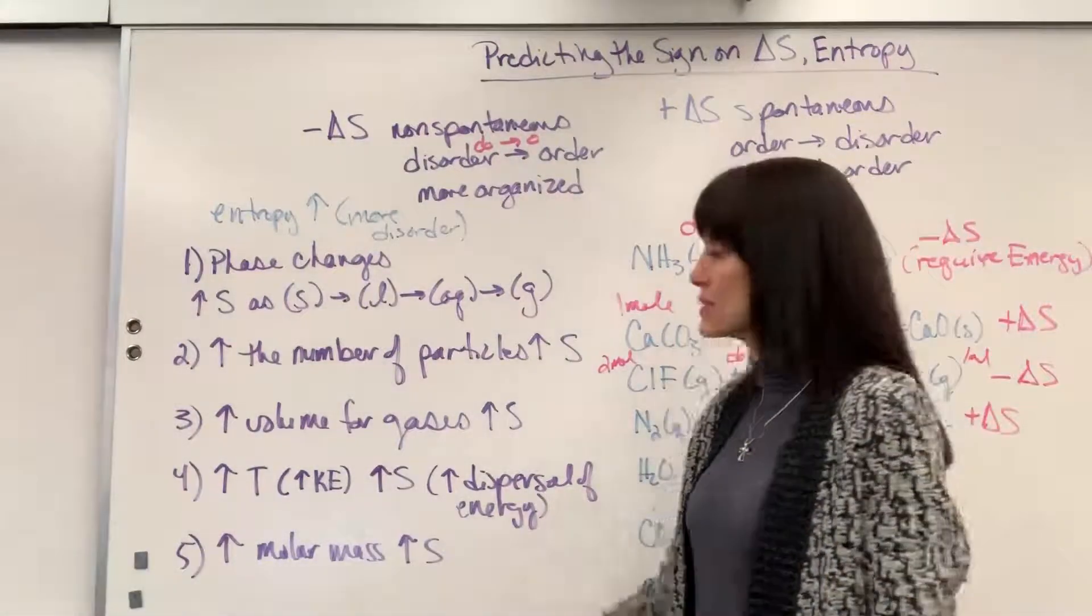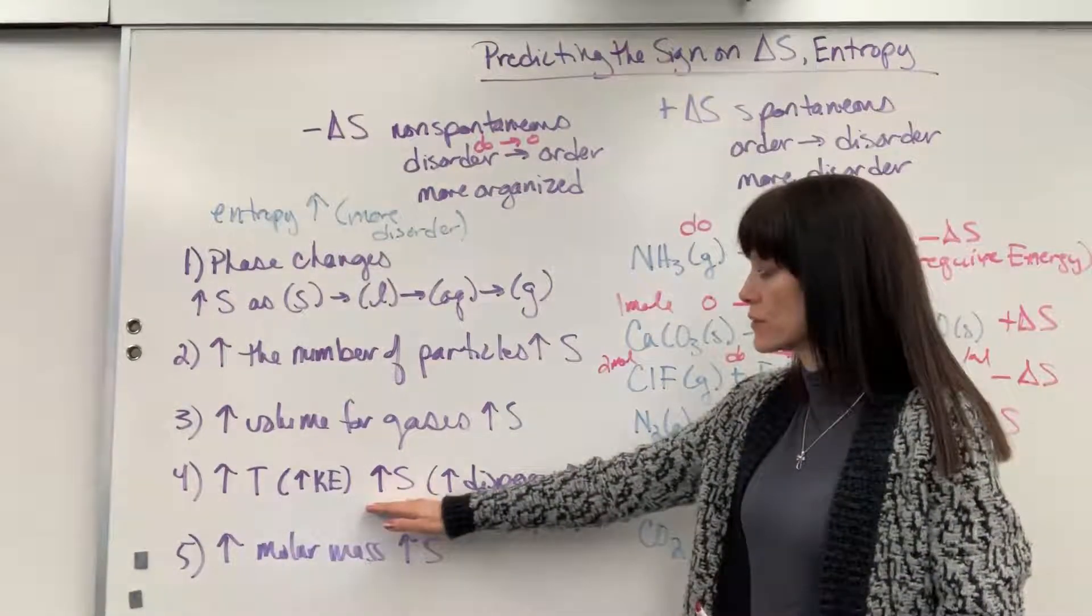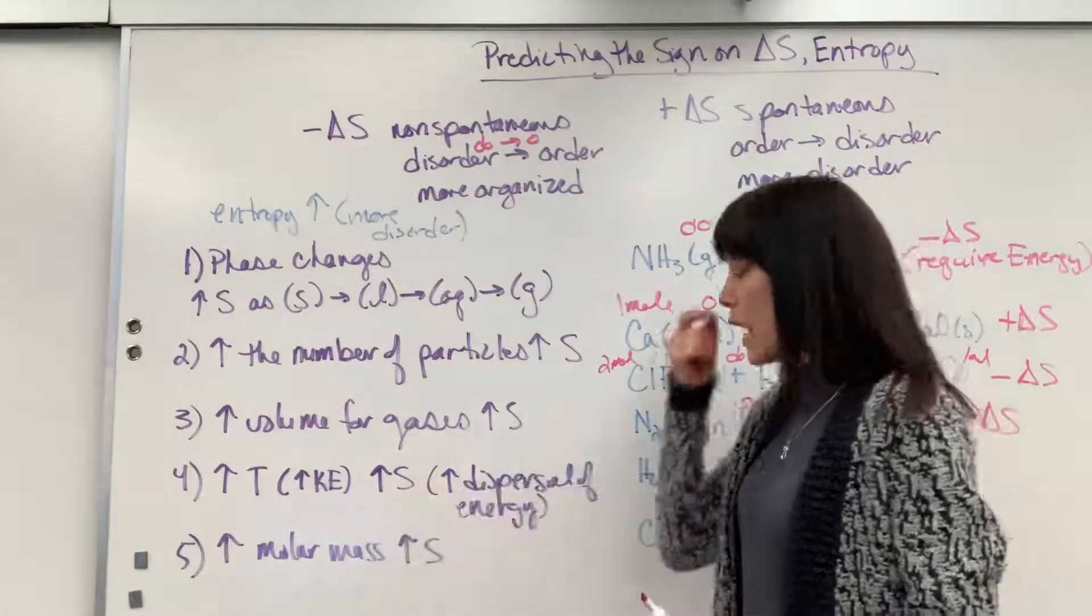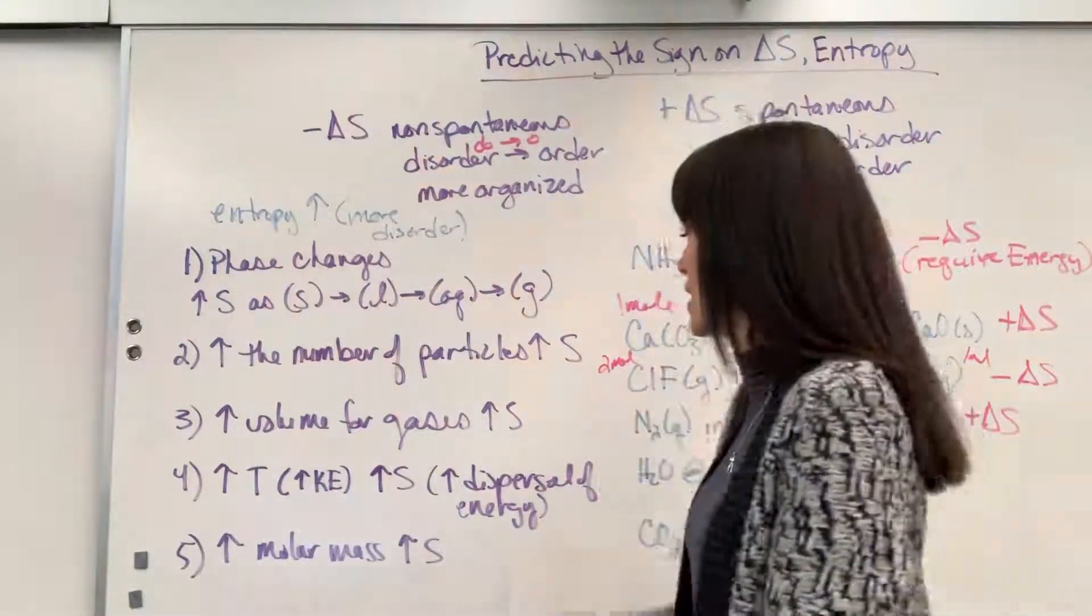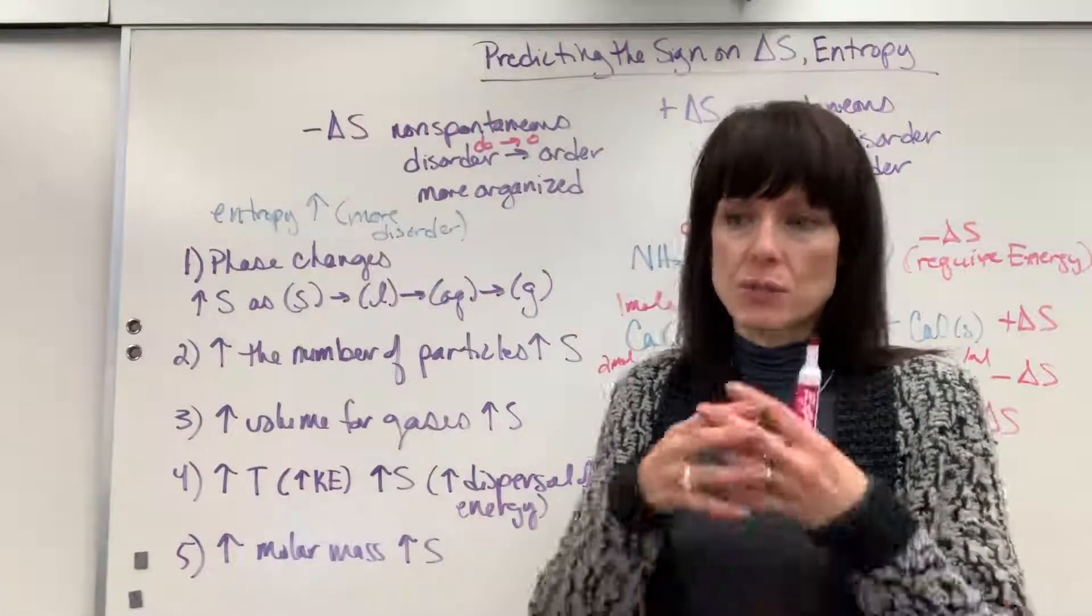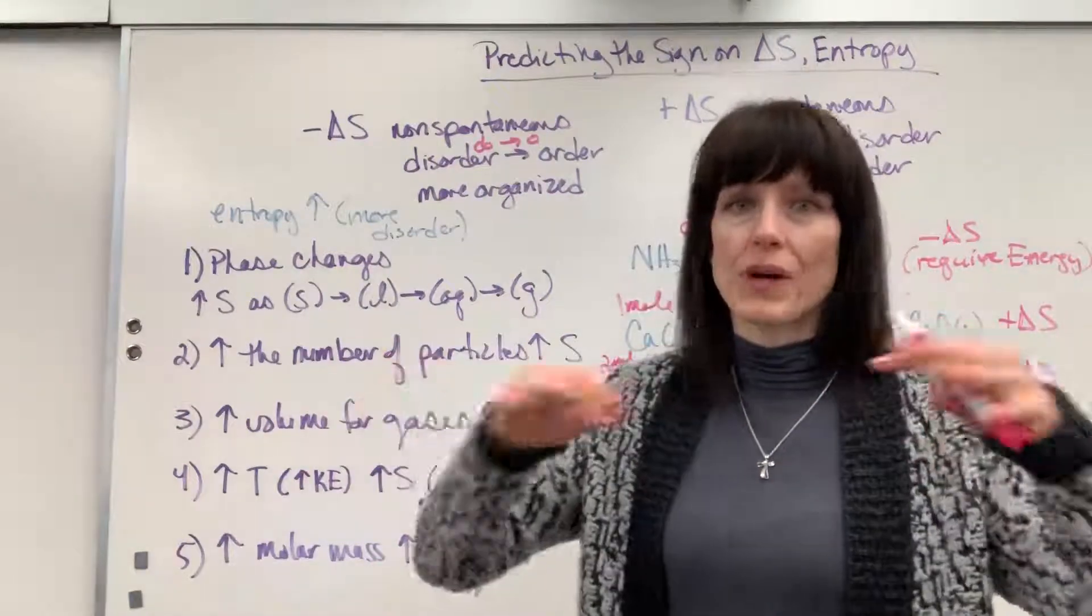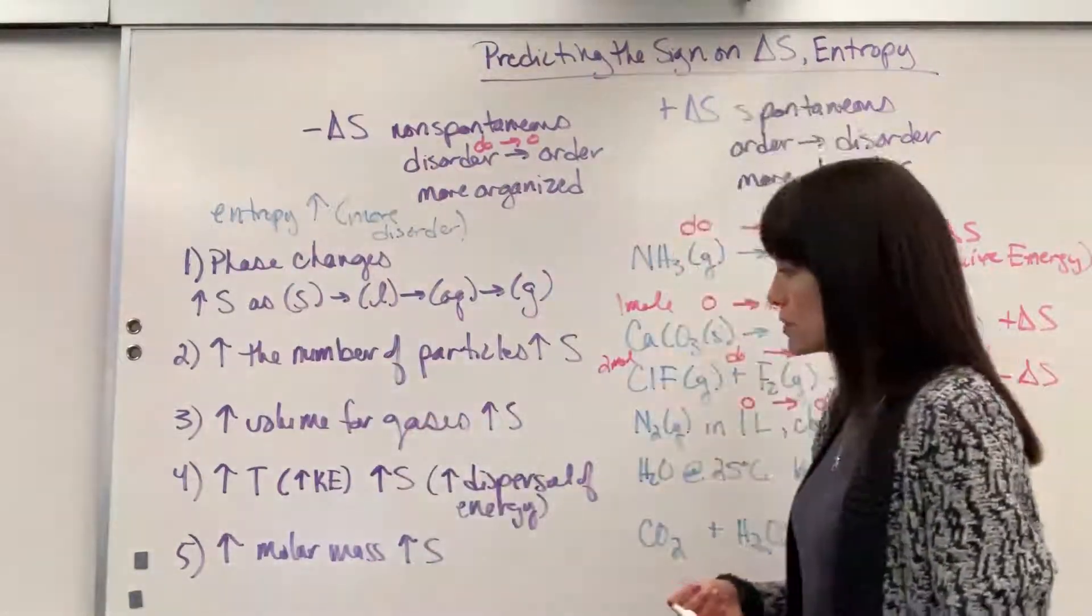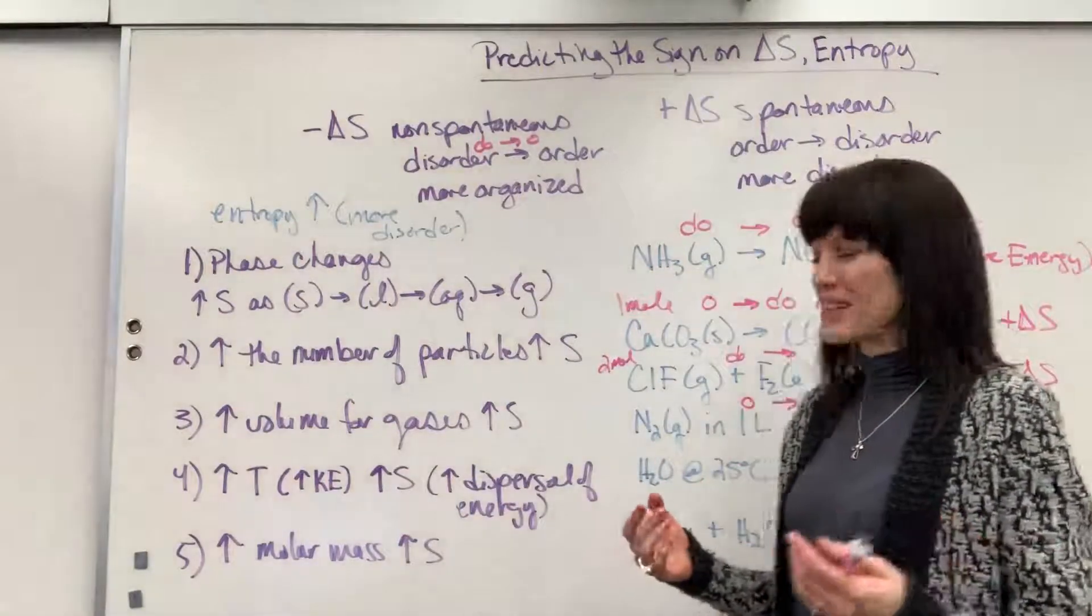Number four. As we increase the temperature, which is an increase in kinetic energy, it also increases the entropy, the disorder. And this makes sense, as you add energy, so as we increase the temperature, it's going to increase the dispersal of the energy. And dispersing energy, that's really the disorder, how we spread out energy. We disperse that energy is through disorder.